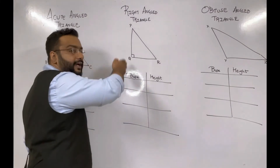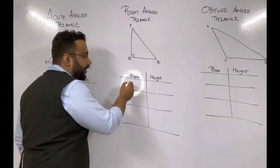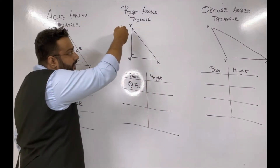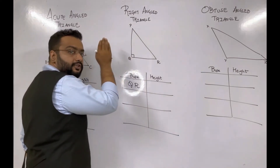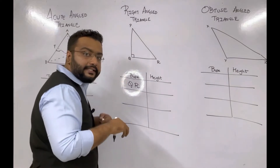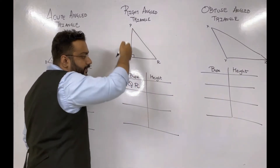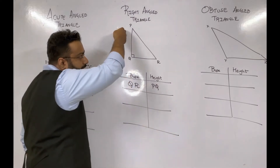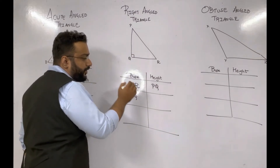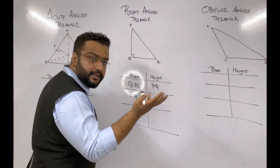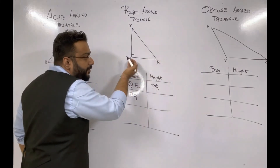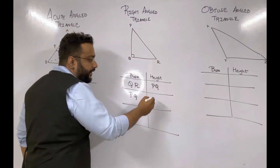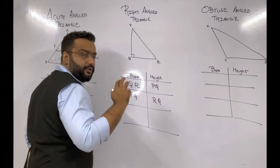Now let's look at the right angle triangle. If we take QR as the base, its height starts from the opposite vertex P. In a right angle triangle we already have a perpendicular from P, so we don't need to draw an extra height for base QR — the height is PQ. Similarly, if I take base as PQ, the opposite vertex is R, and we already have a perpendicular from R, so the height corresponding to base PQ is RQ.